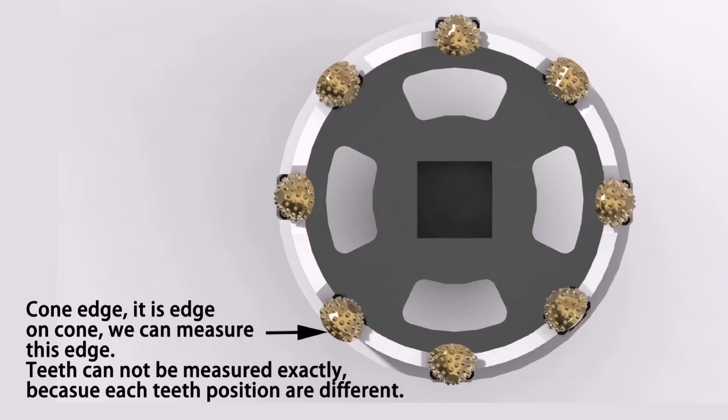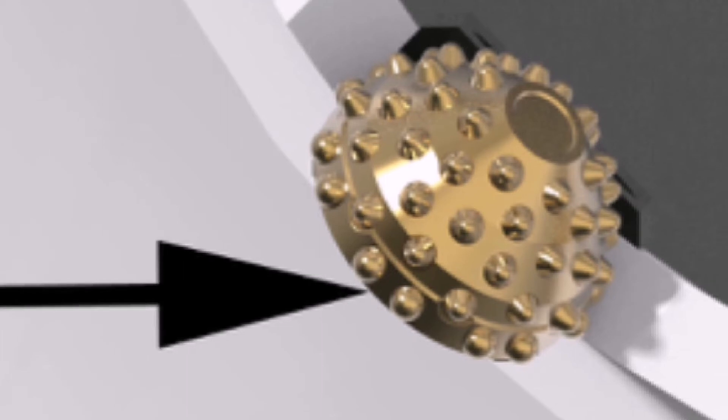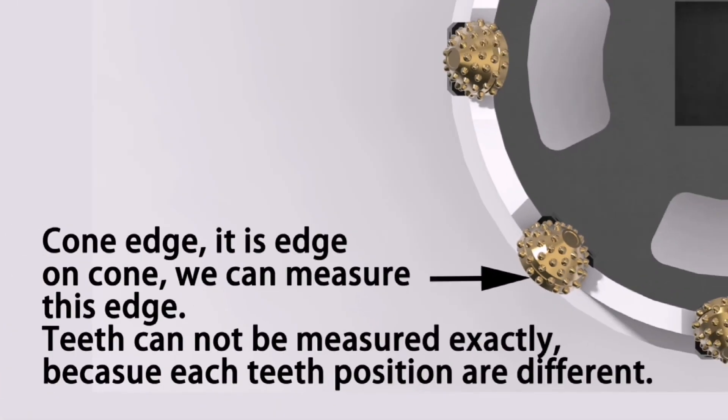Because the cone is rotating, the teeth cannot be measured exactly, so we have to make this edge, we call it cone edge.